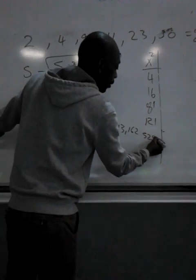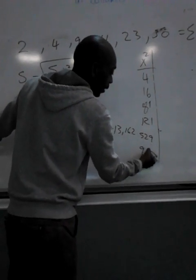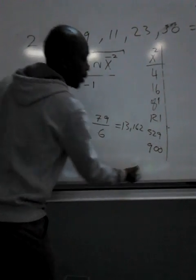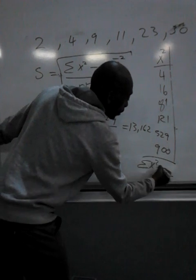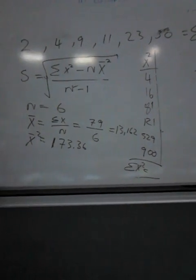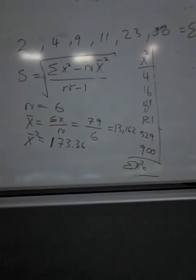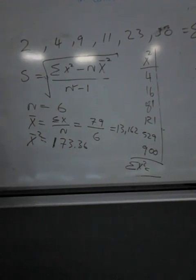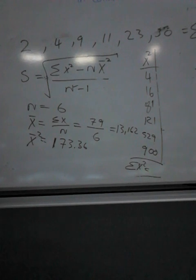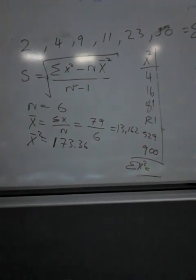529 plus 900. Can you see it? So what happens when you sum all of it, it becomes x squared. So how much is it? 81 plus 16 plus 4.